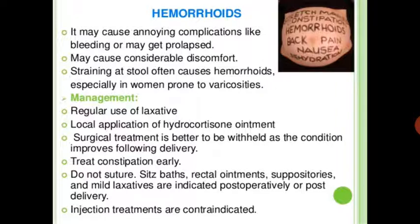Next is hemorrhoids. They may cause annoying complications like bleeding or may become prolapsed, causing considerable discomfort. Straining at stool often causes hemorrhoids, especially in women prone to varicosity. Management: regular use of laxatives, local application of hydrocortisone ointment. Surgical treatment is better withheld as the condition improves following delivery. Treat constipation early; sitz baths, rectal ointments, suppositories, and mild laxatives are indicated. Post-delivery injection treatment is contraindicated.